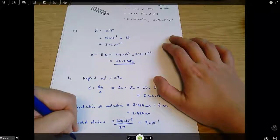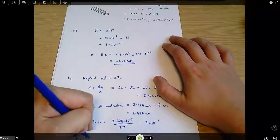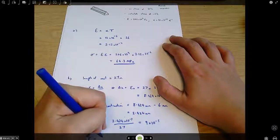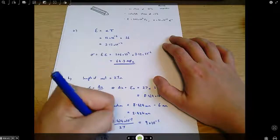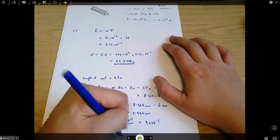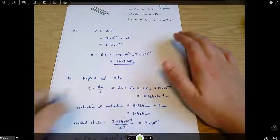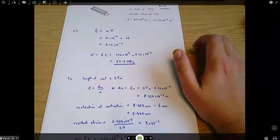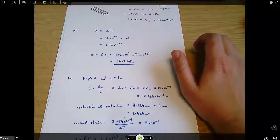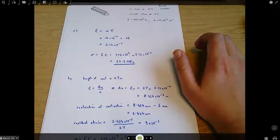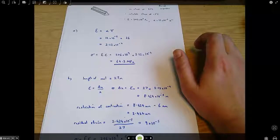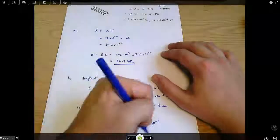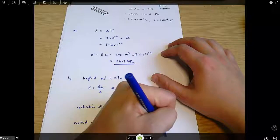And then we can say stress is, same as before, Young's modulus times strain, which is 206 times 10 to the 9 multiplied by 9 times 10 to the minus 5, which equals 18.5 megapascals.